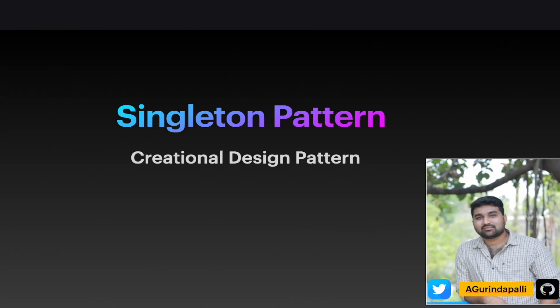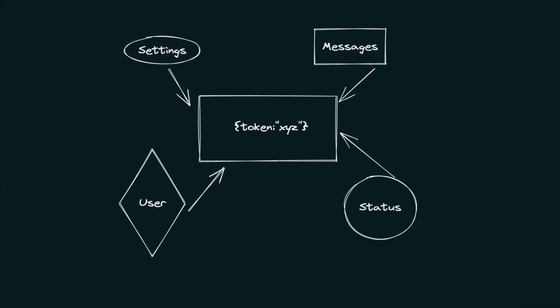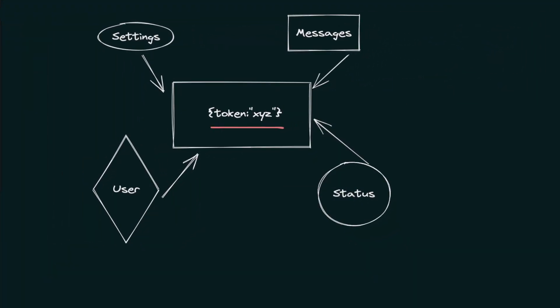Hello everyone, welcome to the series on design patterns. In this video we are going to look into the simplest of all the design patterns: the singleton pattern. I am your host Anil Gurinder Palli and I'm a full stack developer. The singleton pattern is just a way of creating an object which can be shared globally with all the resources of that application without losing the data inside. The reason why it is called singleton is that at any given point of time we can only create one instance of this particular class. To better understand the singleton pattern, let's take a look at an example.